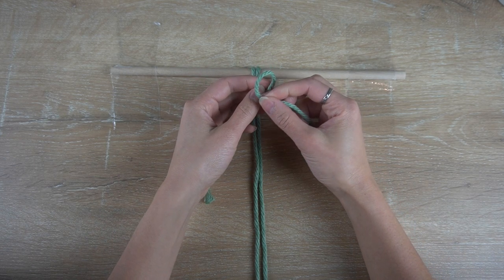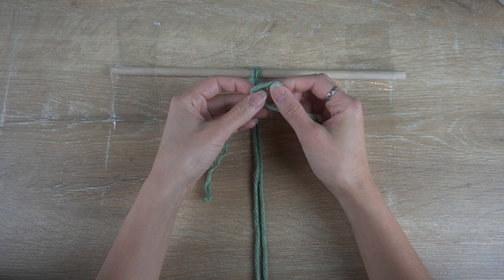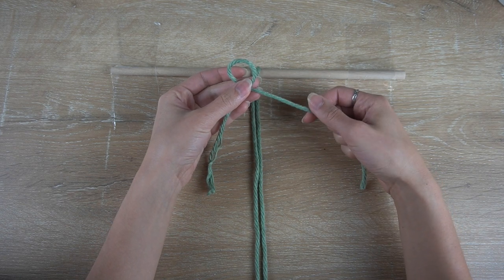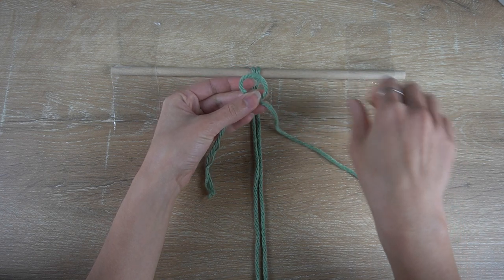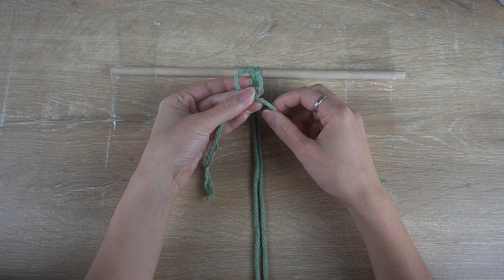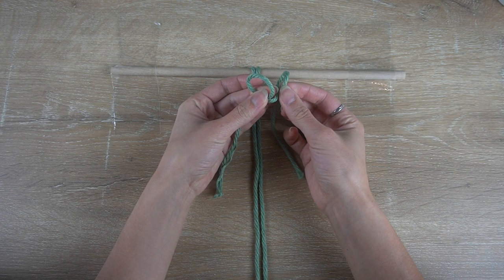Starting with the horizontal eternity knot, I have one strand of cord about 40 centimeters long here. I'm going to make a loop in the center by folding the right side over the left.